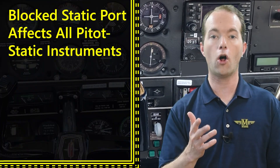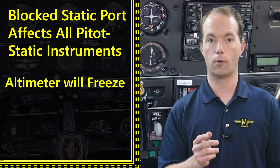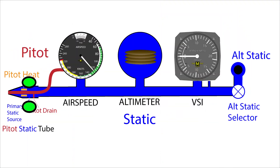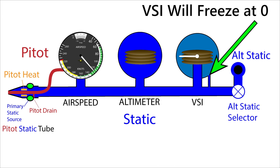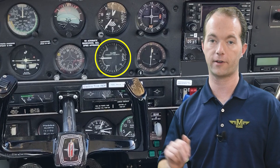A blocked static port affects all pitot-static instruments. The altimeter will freeze with a blocked static port because, unlike the airspeed indicator, the aneroid inside the altimeter is sealed, so only the static air inside the instrument case can act on it. If the static port is blocked, the static air can't get to the aneroid and so it's going to freeze. The vertical speed indicator is also only connected to the static system, but differently than the altimeter — its aneroid is directly connected to the static system, and the case has a calibrated leak so that it can sense a difference in pressure as you climb or descend. With a blocked static port, the VSI needle will freeze at zero, and if you're certain you're climbing or descending but you see zero on the needle, then you can be certain you've got a blocked static port. If the altimeter is frozen, you should see zero on the VSI as well, and so this is a good time to switch over to the alternate static port.